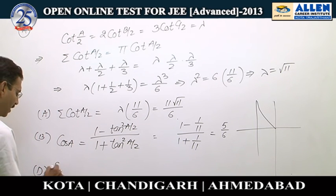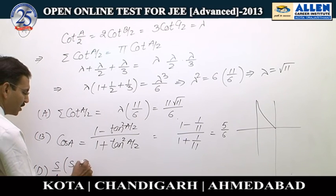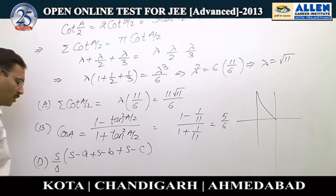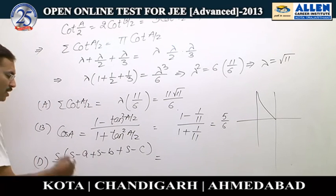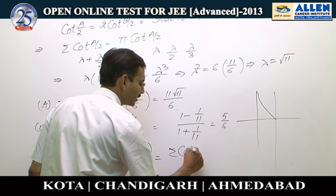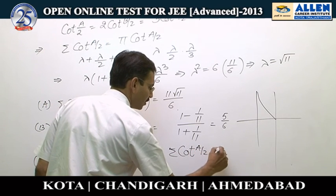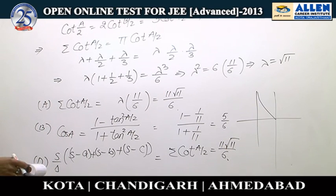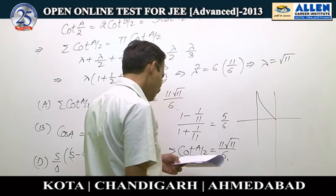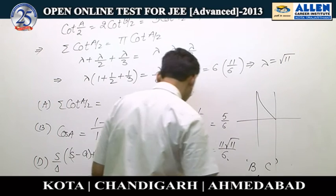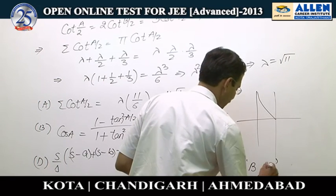For option D, we can write S²/Δ in terms of (S·(S-A)/Δ) + (S·(S-B)/Δ) + (S·(S-C)/Δ), since one S can be split as (S-A) + (S-B) + (S-C) = 3S - 2S = S. Each term S(S-A)/Δ gives cot(A/2), so the sum equals cot(A/2) + cot(B/2) + cot(C/2) = 11√11/6, which we calculated earlier. So option D is correct. The final answers are B and D only — C was incorrectly identified; B and D are the right options.